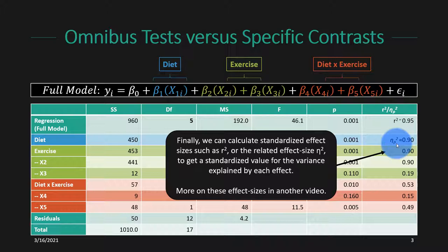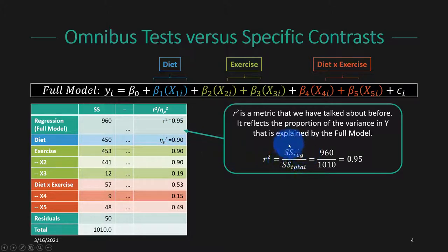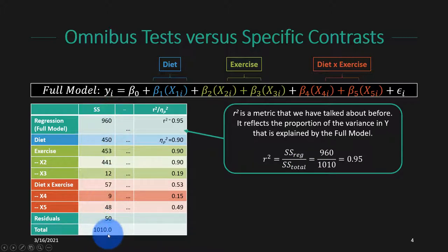We'll talk about strengths and weaknesses of both at the end. For the first row we calculate an r-squared; for everything else below, we calculate a partial eta-squared. R-squared should feel familiar — it reflects the proportion of variance in the dependent variable explained by the full model. To calculate r-squared, we take the total sums of squares explained by the regression and divide by the total sums of squares.